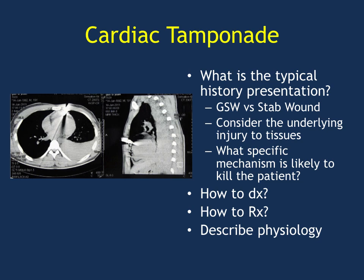Diagnosis and treatment for cardiac tamponade from penetrating trauma: diagnosis would be physical exam findings and a stab wound in the chest with the right clinical scenario. Treatment requires decompressing the heart. If the patient is stable, you might do a pericardial window, but if they're crashing and unstable, they're going to get a thoracotomy to decompress the heart. The mechanism is that bleeding creates a little clot that closes off the pericardial wound, but blood continues to accumulate inside.